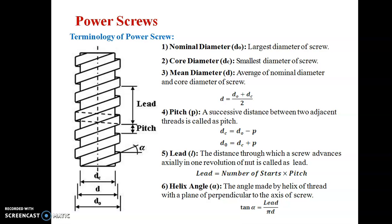Now we will see the terminology of a power screw. You can see here it possesses an outer diameter and an inner diameter. The outermost diameter, d_o, is known as the nominal diameter — it is the largest diameter of the screw. The core diameter, d_c, is the innermost and smallest diameter of the screw.